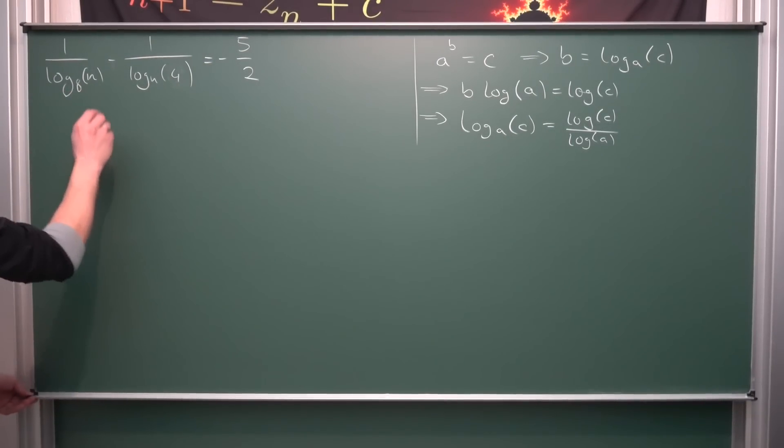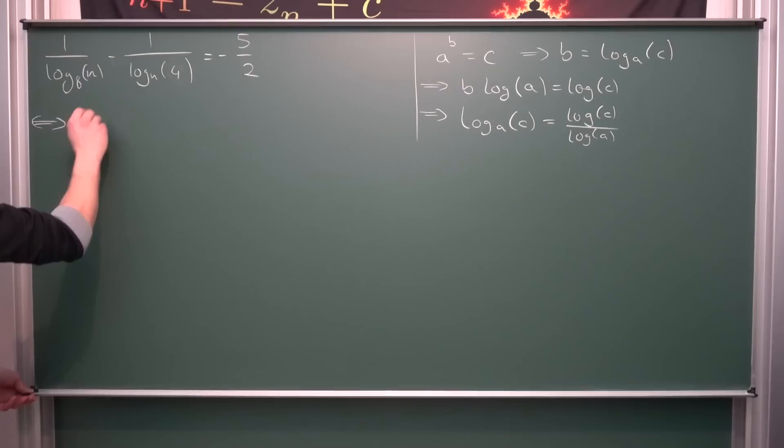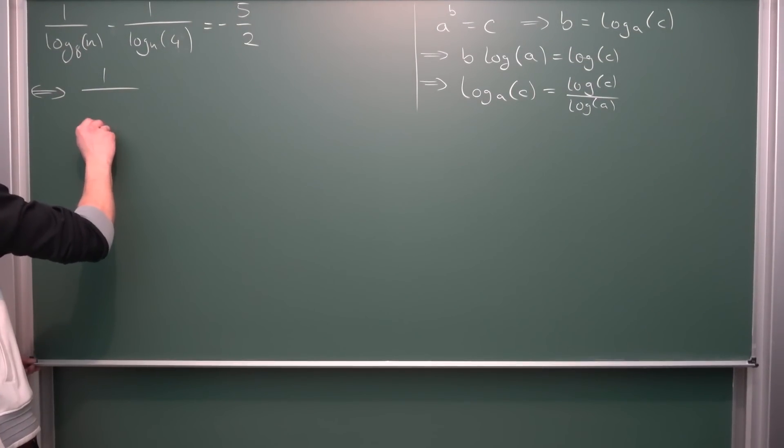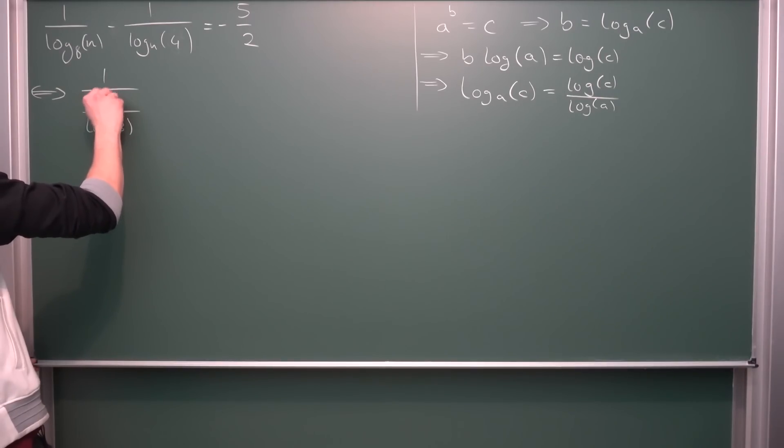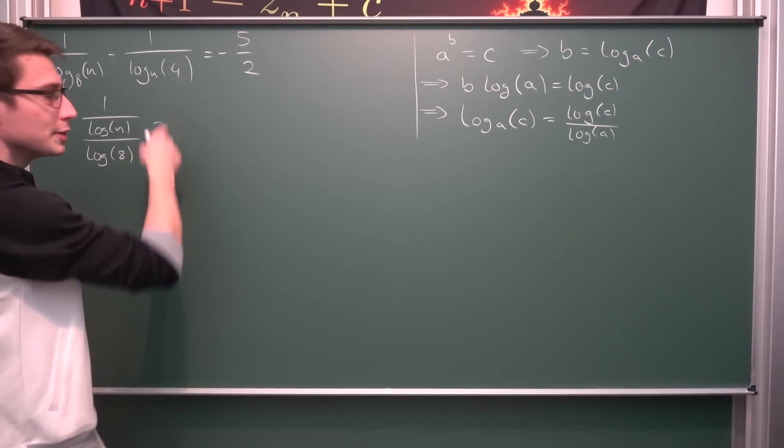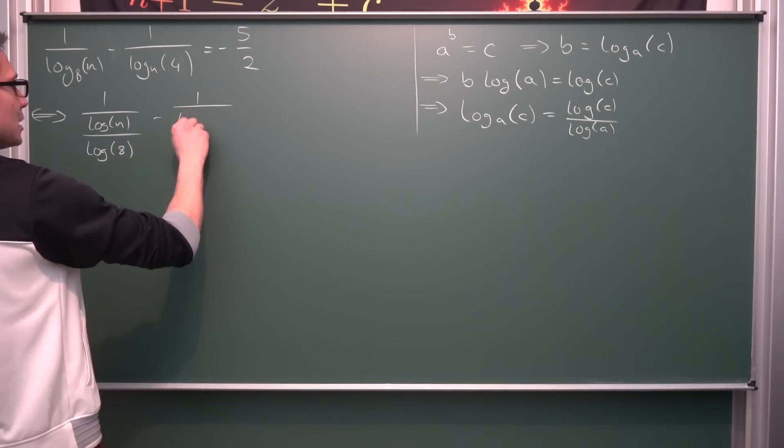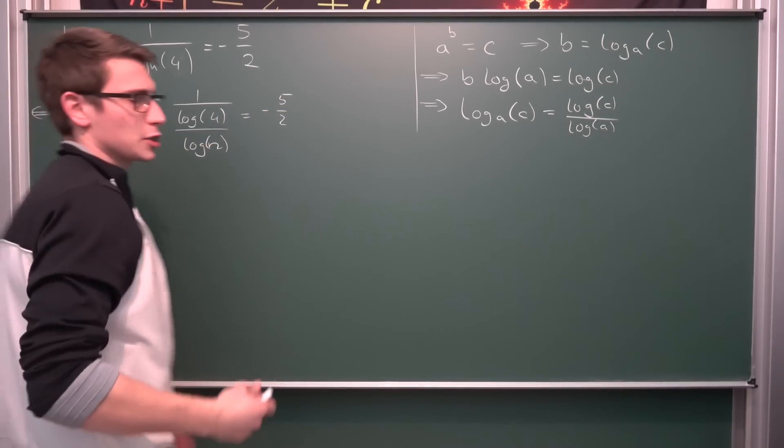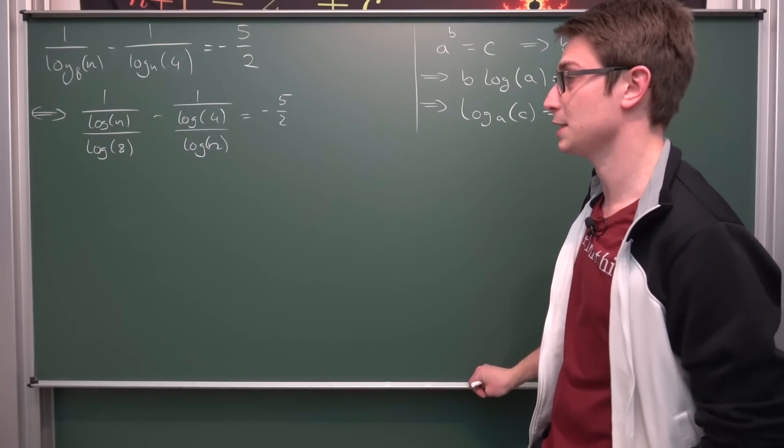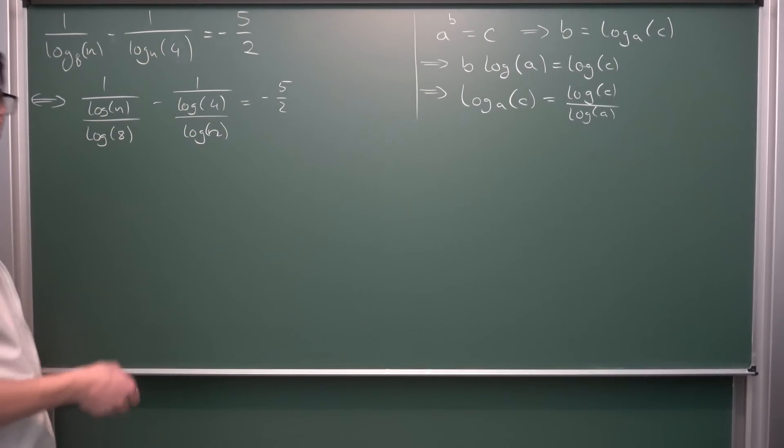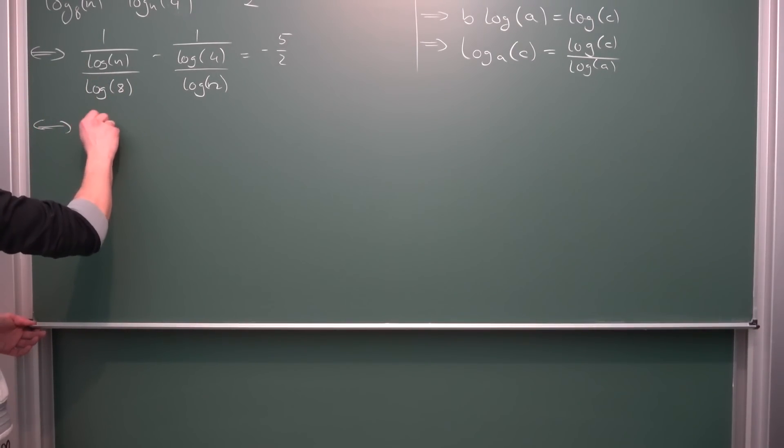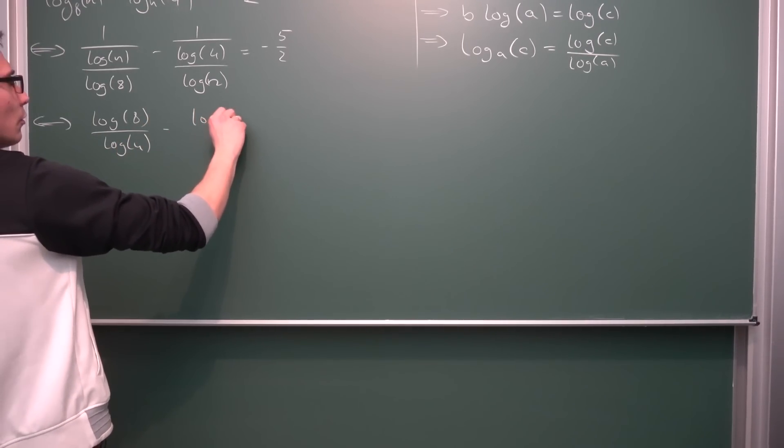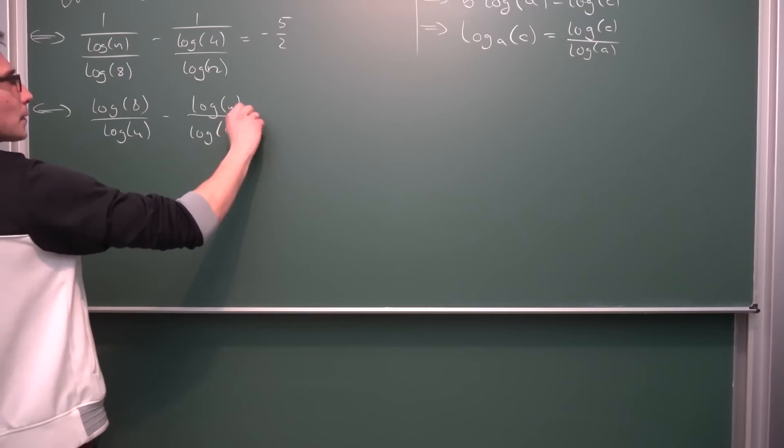Now let us take a look at log base 8 of n. This right here is equivalent to saying we have 1 over the natural log of 8 divided by the natural log of n. Now we have negative 1 divided by the natural log of 4 divided by the natural log of n. And all of this is equal to negative 5 over 2. Now we are just going to do some simple algebra and we are going to solve for the natural log of n. To do this we are going to take the reciprocals here, giving us the logarithm of 8 divided by log of n minus the log of n divided by the log of 4 is equal to negative 5 over 2.